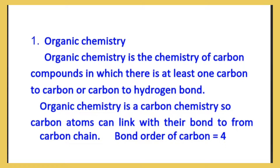The chemistry is a carbon chemistry, so carbon atoms can link with their bond to form a carbon chain. Carbon chemistry can link with the bond to form a carbon chain. It is made by valence — the valence is made by its capacity.